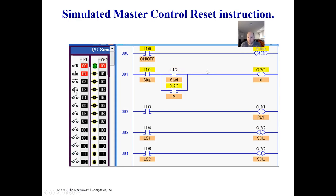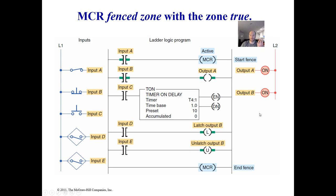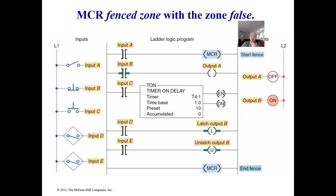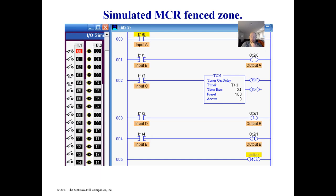In the demonstration, the MCR is on and everything is activating as normal. We're latching an output on — we can unlatch it, no big deal. Now if I come up here and turn my MCR off, you'll notice it happened quickly, but the latched instruction stayed on, just like a counter that would retain its information. Everything can turn back on when the MCR is activated again.